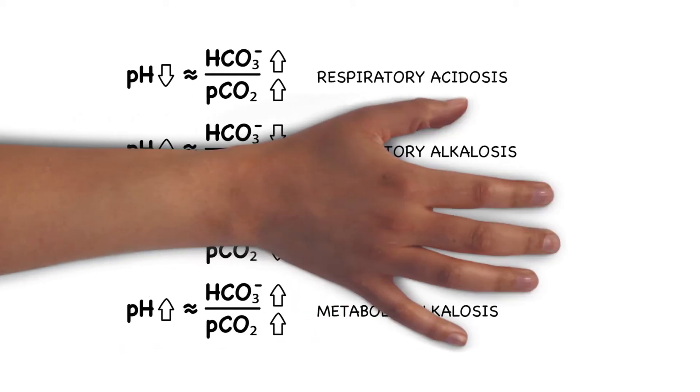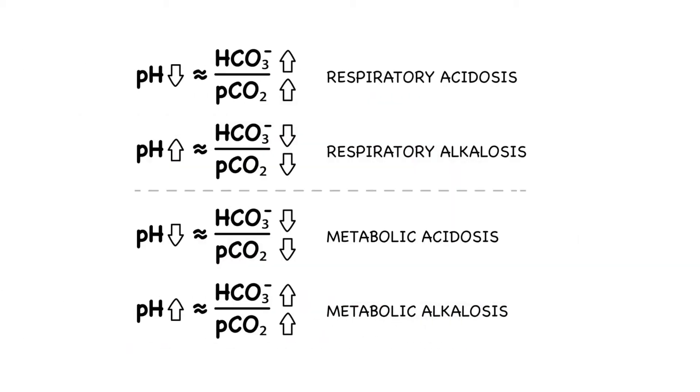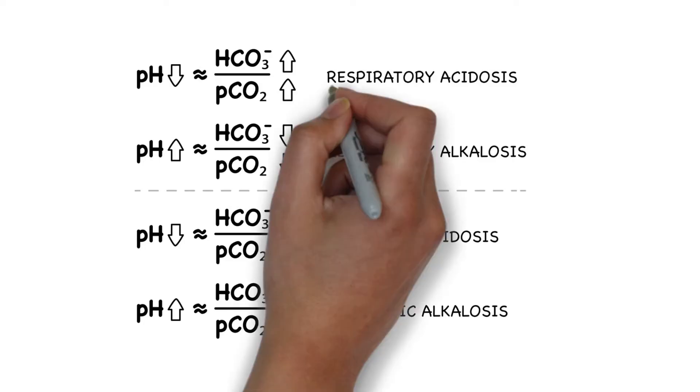So let's recap the different types of acid-base disorders real quick. For simplicity's sake, acute and chronic respiratory problems have not been separated out.